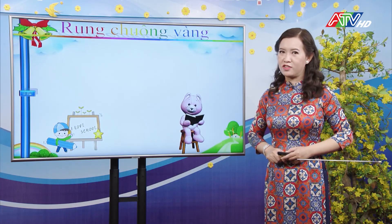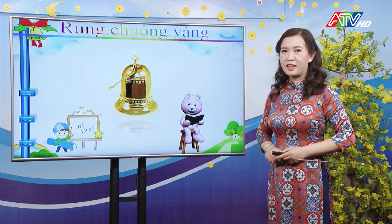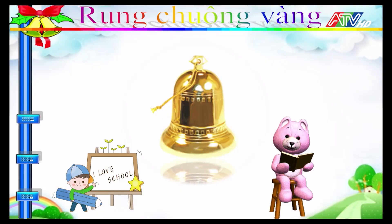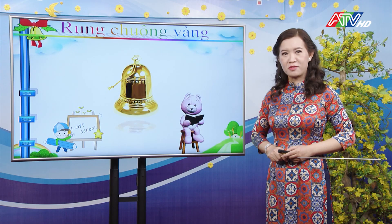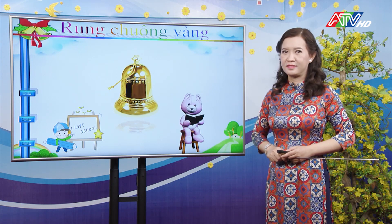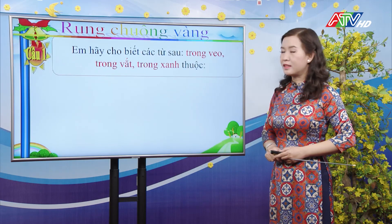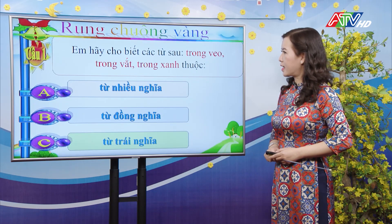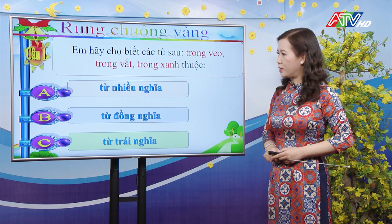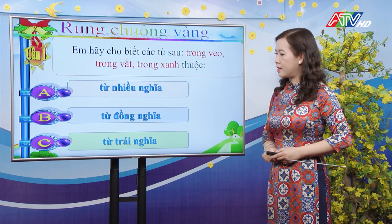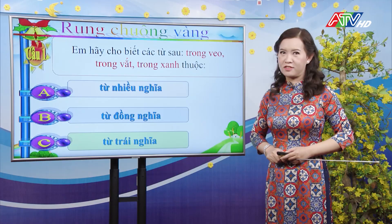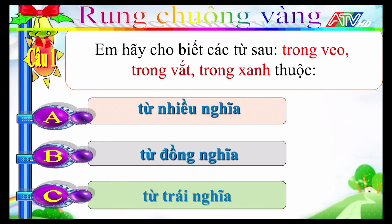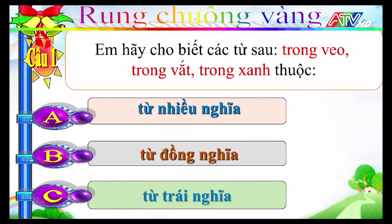Bây giờ cô sẽ cho các con chơi trò chơi rung chuông vàng. Các con sẽ vận dụng những kiến thức đã học để lựa chọn câu trả lời đúng nhất. Câu 1: Các từ trong veo, trong vắt, trong xanh thuộc A-từ nhiều nghĩa, B-từ đồng nghĩa, C-từ trái nghĩa. Đáp án đúng là B: các từ trong veo, trong vắt, trong xanh là từ đồng nghĩa.